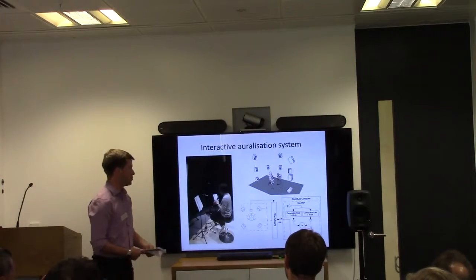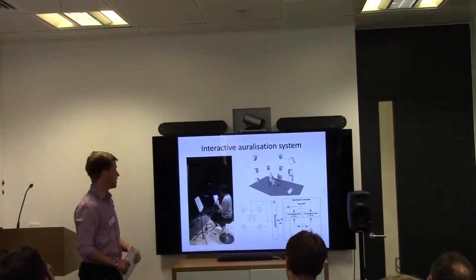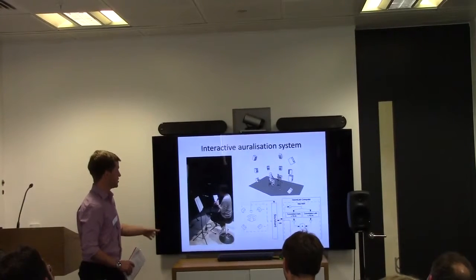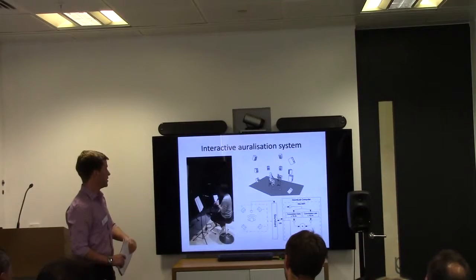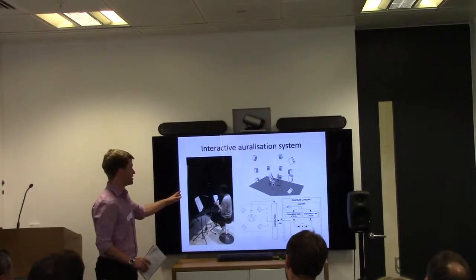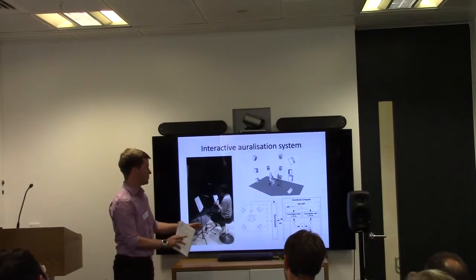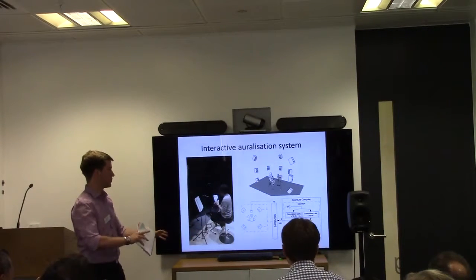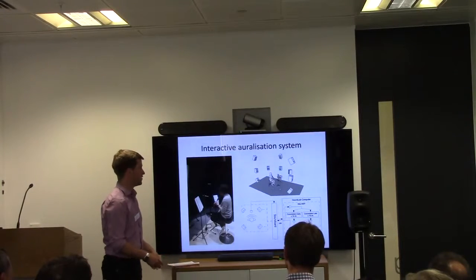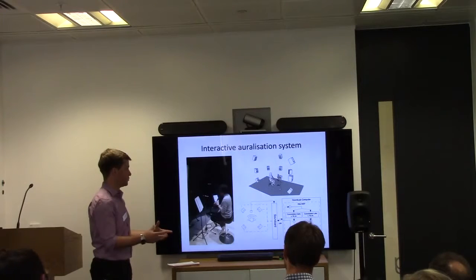This is a representation of the auralisation system. A test participant is seated in the sound lab with a wooden floor representing the stage floor. The direct sound from the instrument is captured by a microphone, which is then convolved in real time with the impulse responses measured on stage. These are split into early and late times to give a little bit more control over the acoustic conditions. The resulting signals are played back over a loudspeaker array to give the musician the impression that they are playing in the actual space.